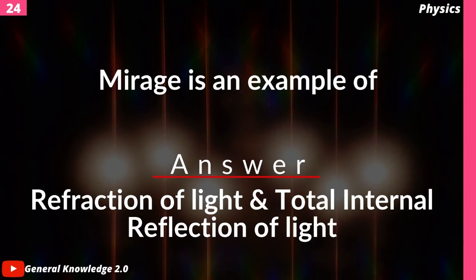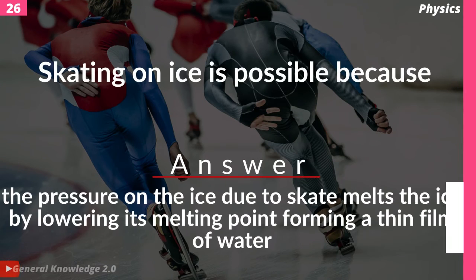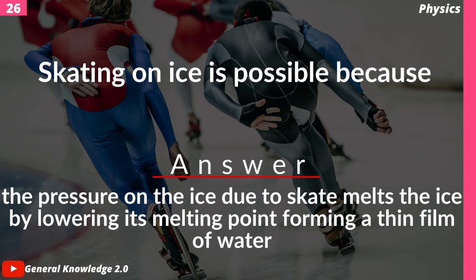Mirage is an example of — answer: reflection of light and total internal reflection of light. A periscope works by the principle of — answer: total internal reflection. Skating on ice is possible because — answer: the pressure on the ice due to the skate melts the ice by lowering its melting point, forming a thin film of water.